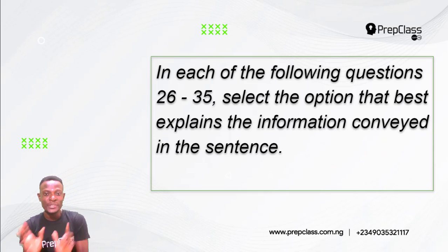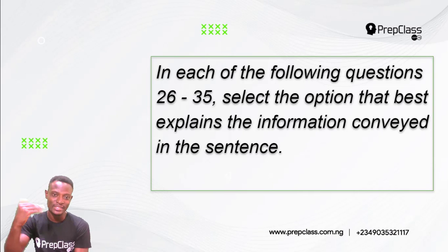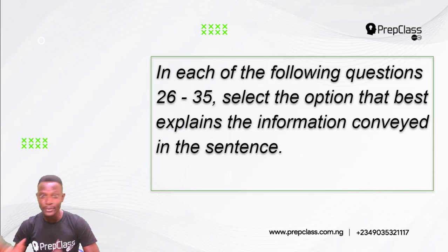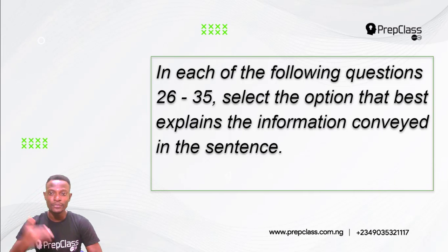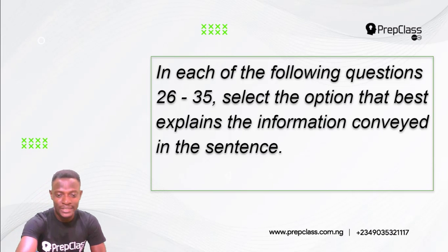In this video, we will continue from where we stopped in the last video. In the last video, we answered questions 26 to 30. So in this video, we will continue to answer questions 31 to 35. The instruction reads: in each of the following questions 31 to 35, select the option that best explains the information conveyed in the sentence. Alright, let's begin.